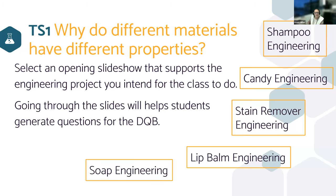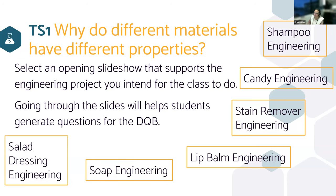We have shampoo engineering, candy engineering, stain remover engineering, lip balm, soap, and salad dressing. Salad dressing was developed during CDL — students can do it 100% at home with materials likely already in their cabinet: oil, vinegar, and emulsifiers like mustard. It's great for absent students or those doing a fair amount of online learning, but can also be done in class.